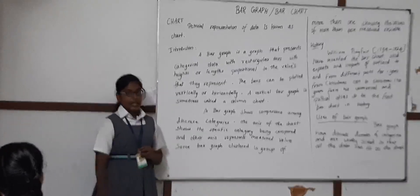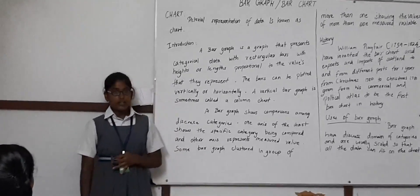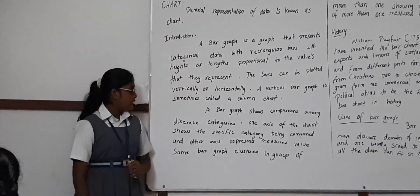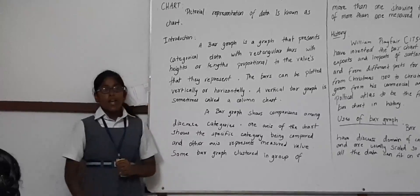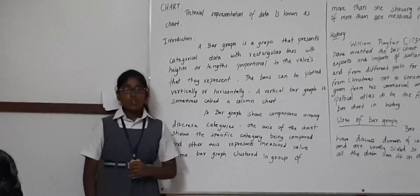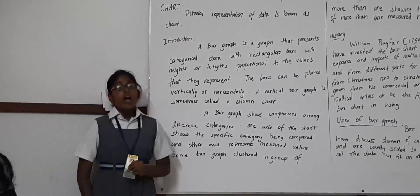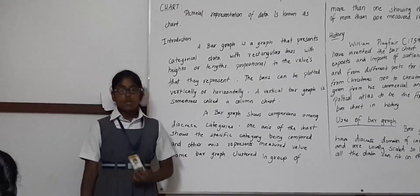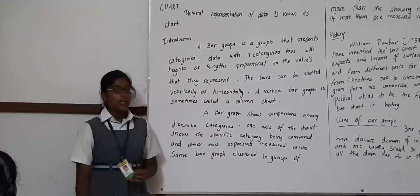A vertical bar graph is sometimes called a column chart. A bar graph shows comparisons among discrete categories. One axis of the chart shows a measured value, and another axis shows a specific category.